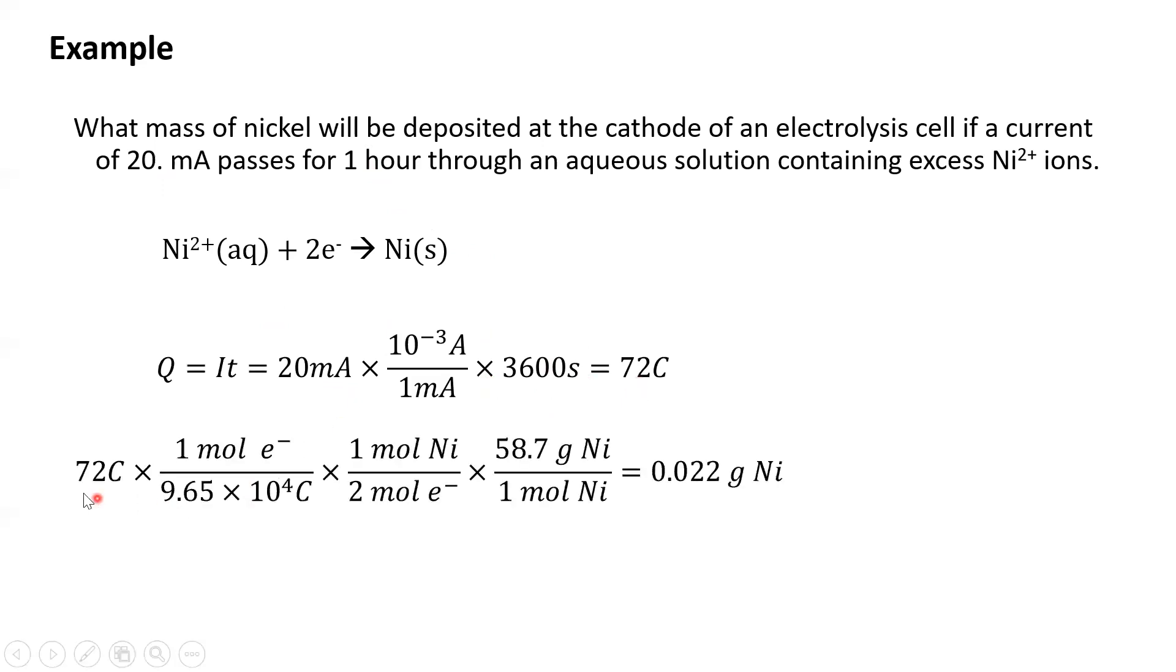So now we're going to do a little stoichiometry. We can take 72 Coulombs and use Faraday's constant to convert from Coulombs of charge to moles of electrons. This balanced equation here enables us to go from moles of electrons to moles of nickel. And then the periodic table enables us to go from moles of nickel to grams of nickel. So if we were to pass 20 milliamps for one hour through a nickel ion solution, we would electroplate 0.022 grams of nickel onto the cathode.